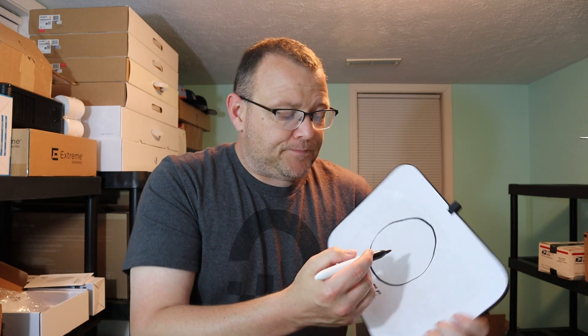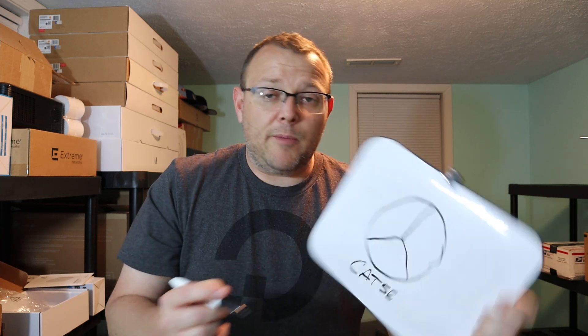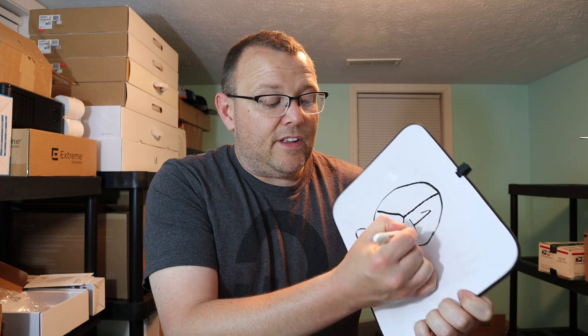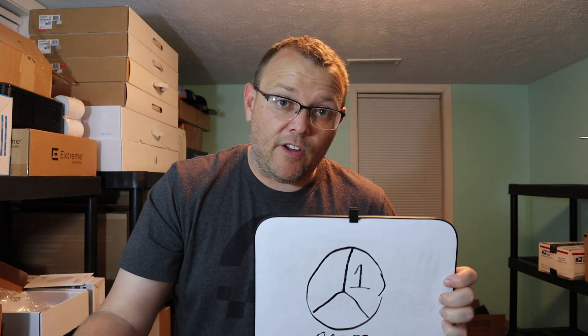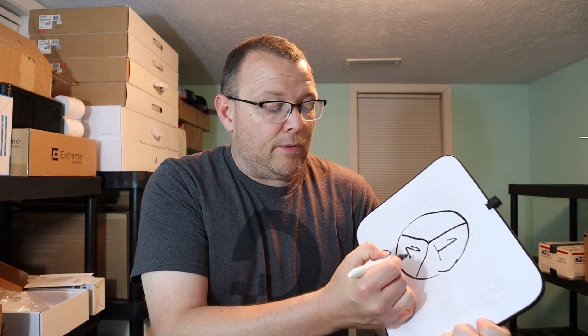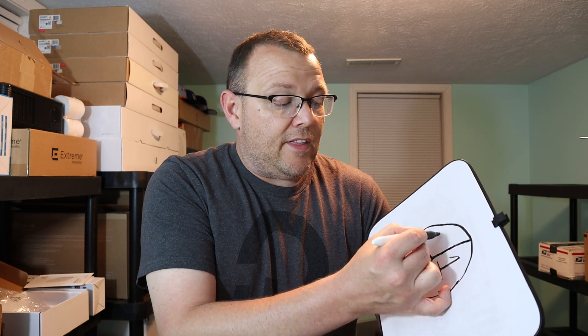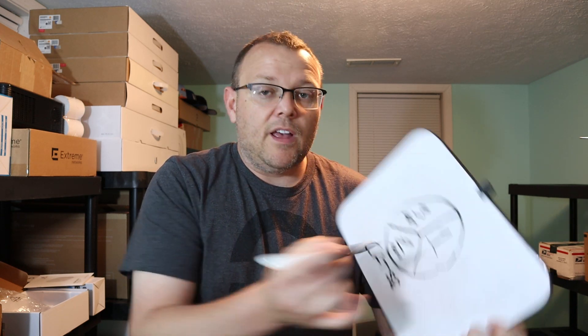By default, your untagged VLAN is going to be VLAN number one. We're going to pretend we're putting three departments on this physical network using the power of VLANs. So this one is going to be VLAN number one — our untagged, default VLAN. We can change that, but that's another subject. Then we've got VLAN number two — let's say that's marketing. And then VLAN number three — let's say that is accounting.